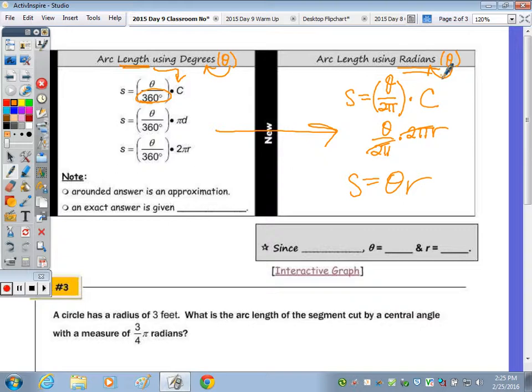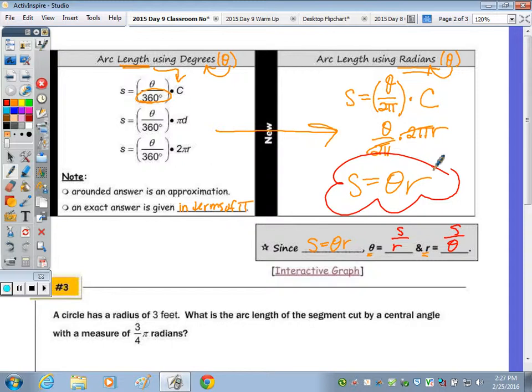Just again, to review on the left, rounded answers is approximation where an exact answer is in terms of pi. I want you to take this equation and solve it for theta and solve it for r. So, in terms of theta, theta is equivalent to, who can give me the answer? How do you solve for theta? S equals theta times r. So, Nick? The ratio of the arc length to the radius. Yeah. And then if I were to solve for the radius, S over theta. You can always use this. You don't have to. If it says find the angle, you don't have to use this formula. Find the radius. You don't have to use this. You can always use this, but this is how you can quickly find the angle, given the radius in your arc length.